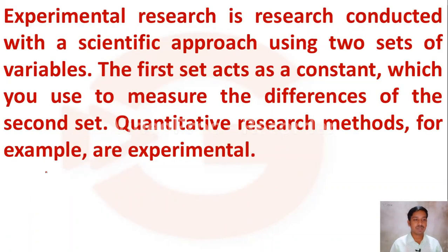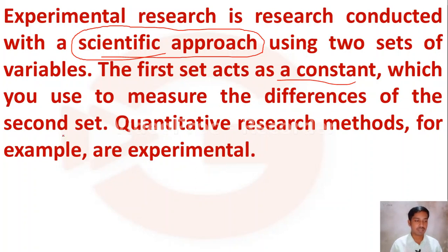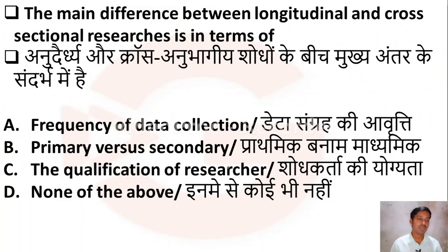Experimental research is conducted with a scientific approach. It uses two sets of variables: the first set consists of constant variables used to measure the difference from the second set. Quantitative research methods such as experimental research fall into this category.